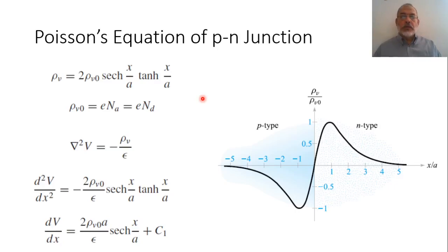In the previous examples, we were solving the Laplace equation because we don't have volume charge density. The question now is: what will be the situation if we have volume charge density? In this case, we should solve the Poisson equation, not the Laplace equation. The Poisson equation, if we remember, is nabla squared V equals minus rho_V over epsilon, where rho_V is the volume charge density in the volume we are going to solve our problem.